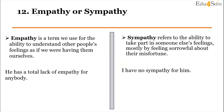Next, our words are 'empathy' and 'sympathy'. Empathy is a term we use for the ability to understand other people's feelings as if we are having them ourselves. For example: 'He has a total lack of empathy for anybody' — he doesn't understand anyone's feelings.